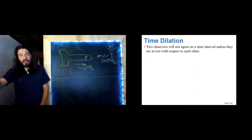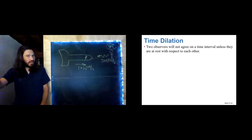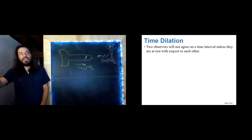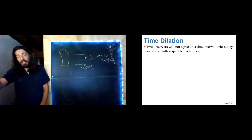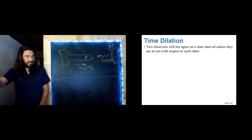Now we're ready to talk about our first very surprising conclusion due to the principle of relativity: two observers will not agree on a time interval unless they're at rest with respect to each other. Two people watching the same cat video will disagree on how long it is unless they are both at rest with respect to that cat video.